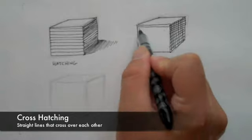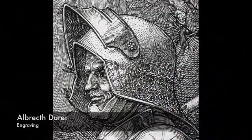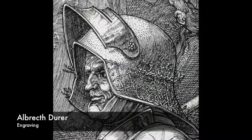And you can make your lines go in all different types of directions, but most of these lines are straight. Here's another example from Dürer, and we see a lot of crosshatching in this example.